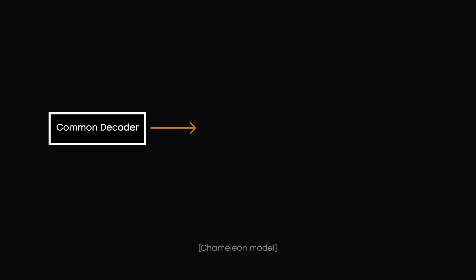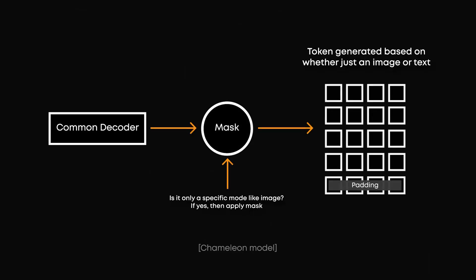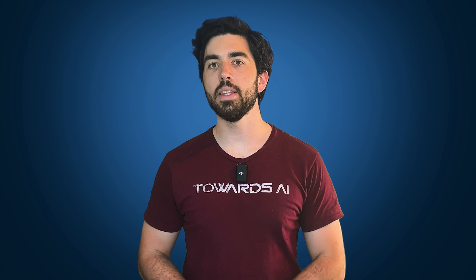A transformer generates one token or word at a time. For text, this is straightforward because text doesn't need a specific length. But for images, which need specific dimensions, Chameleon restricts the token length for images and masks image tokens when generating text. If it sounds so simple, why didn't previous models use a unified encoder? It's because implementing this is quite challenging.